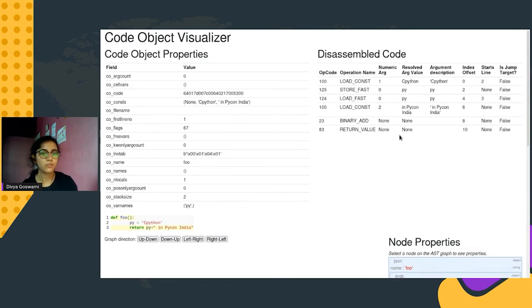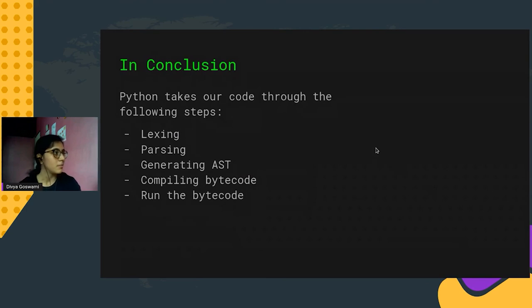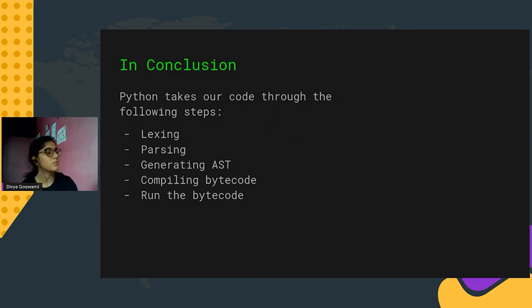In conclusion, Python takes our code through the following steps: lexing — the first step, differencing from its dictionary; parsing — tokenizing every keyword; generating the AST — determining the order in which to execute the code; compiling into chunks of bytecode based on operations and instructions; and finally running the code on the Python stack-based VM.